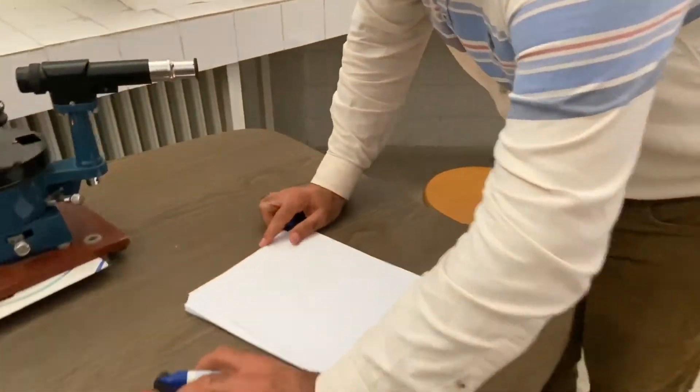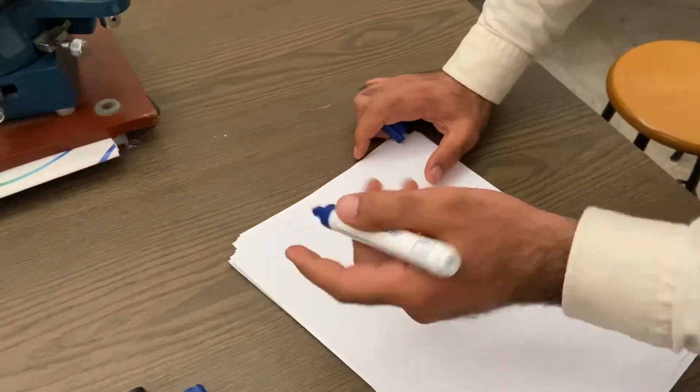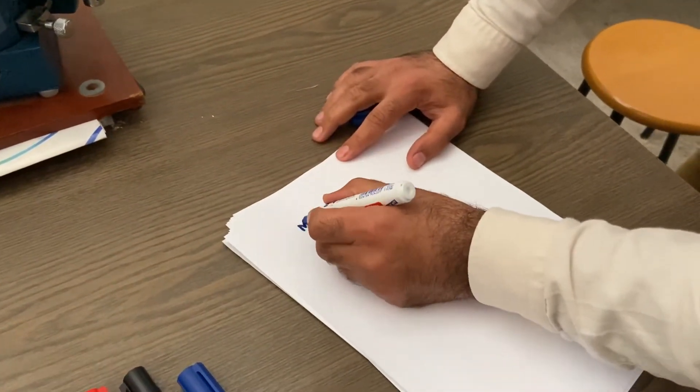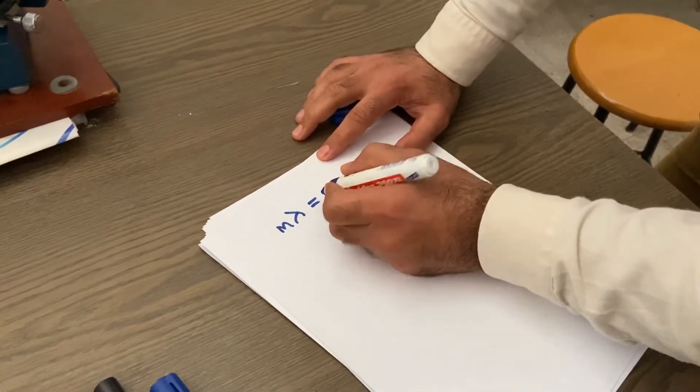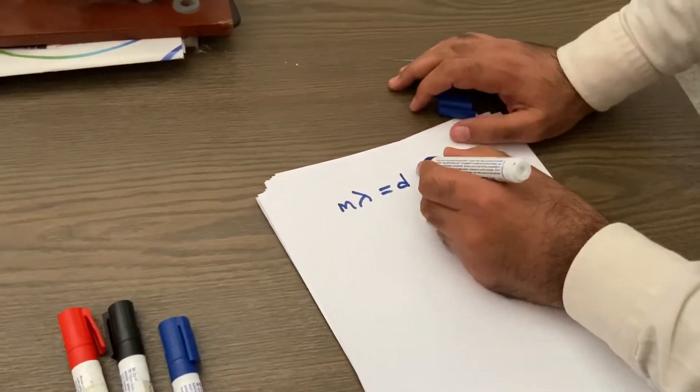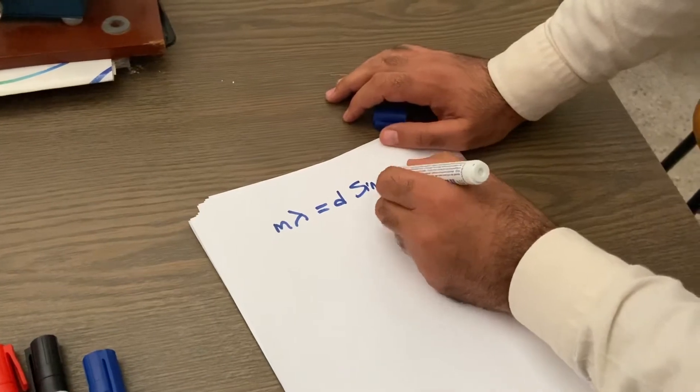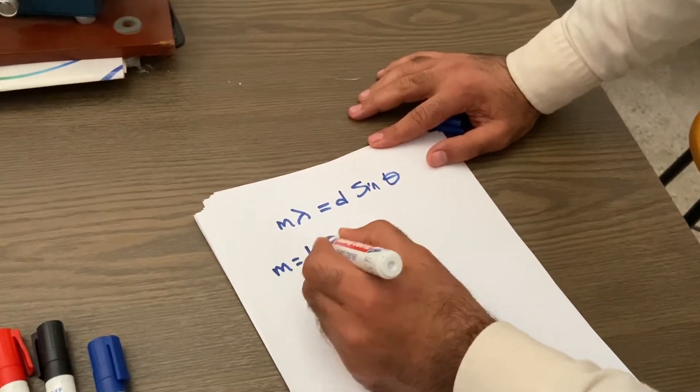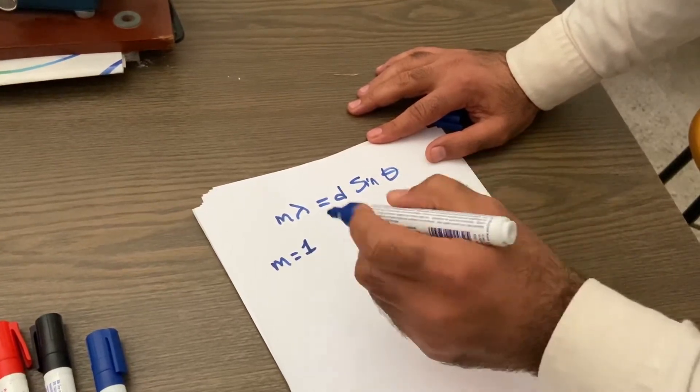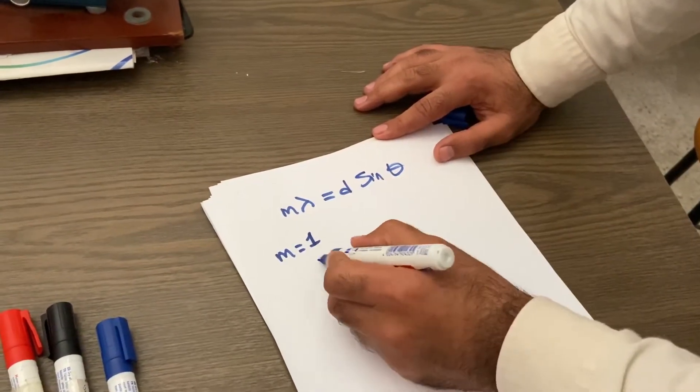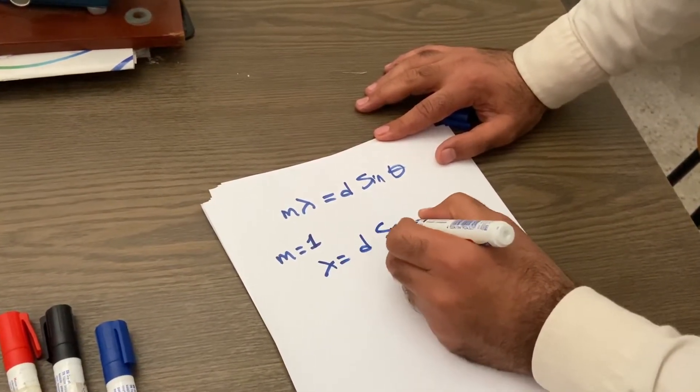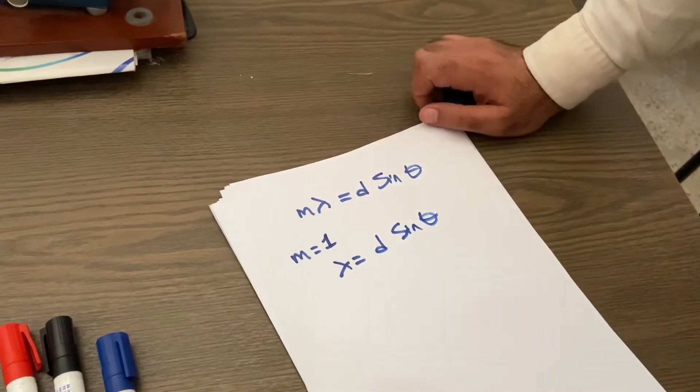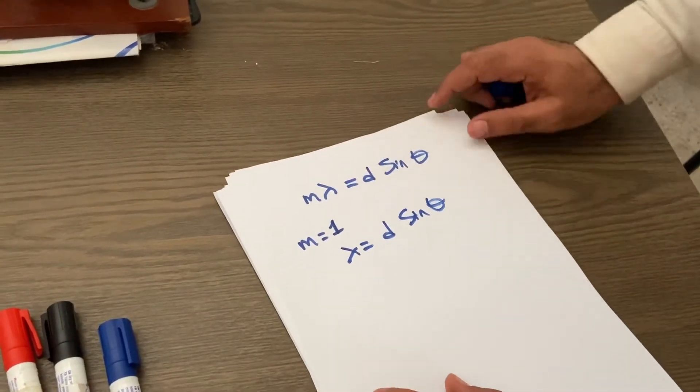You know the grating formula. It's M lambda equals D sin theta. And M equals one here. So we are looking at the first order diffraction, and the lambda would be D sin theta.